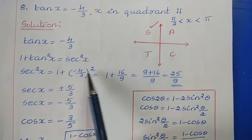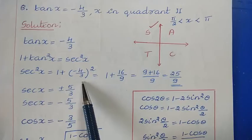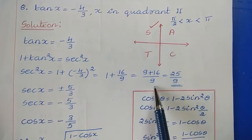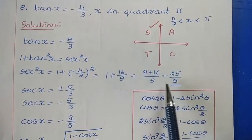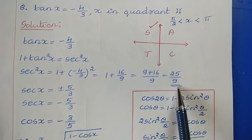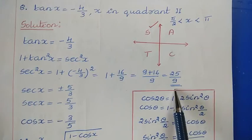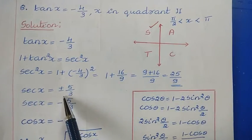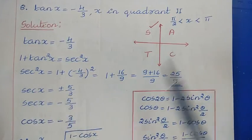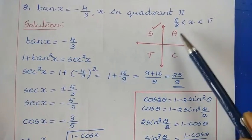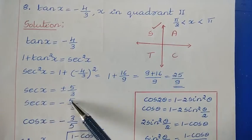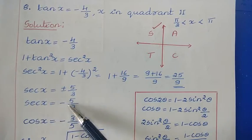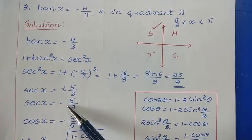Taking common denominator 9: sec²x = (9 + 16)/9 = 25/9, so sec x = ±5/3. Since x is in the second quadrant, sin is positive but sec x is negative. So sec x = −5/3.